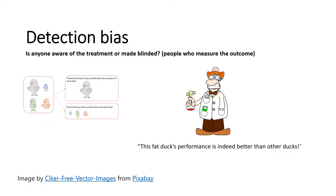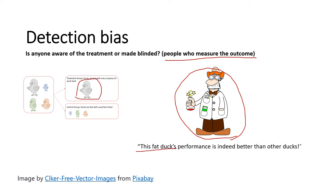The next bias is detection bias, which concerns people who measure the outcome, such as lab personnel. If the person measuring results knows the fatty duck is in the treatment group, they may assume its performance is better than others — an affirmative bias. They already know which duck received special care and look only at data that confirms their assumption. Detection bias deals with the question: is anyone aware of the treatment or made blinded, especially those measuring the outcome?